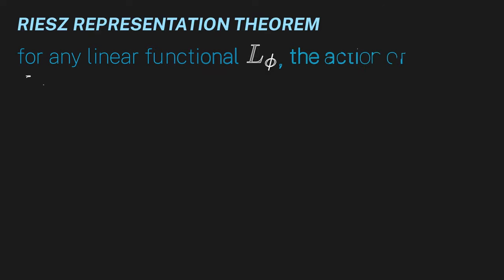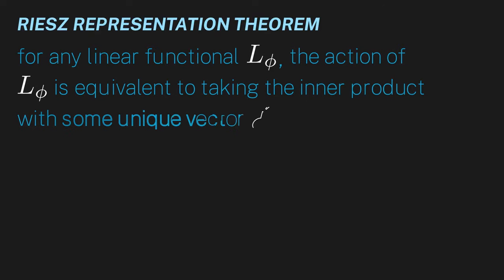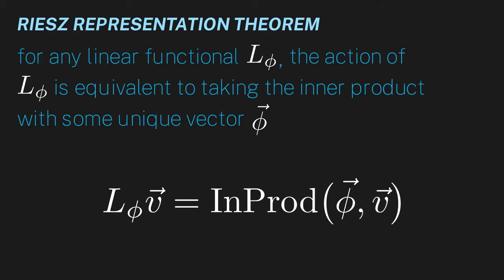This is actually a very deep and general mathematical fact, rooted within something called the Riesz representation theorem. This sounds kind of daunting, but it's just a theorem about what we discussed. The theorem states that for any linear functional L phi, the action of L phi is equivalent to taking the inner product with some unique vector phi. I won't prove the theorem here, but there are a slew of internet sources that have given rigorous proofs if you're interested.